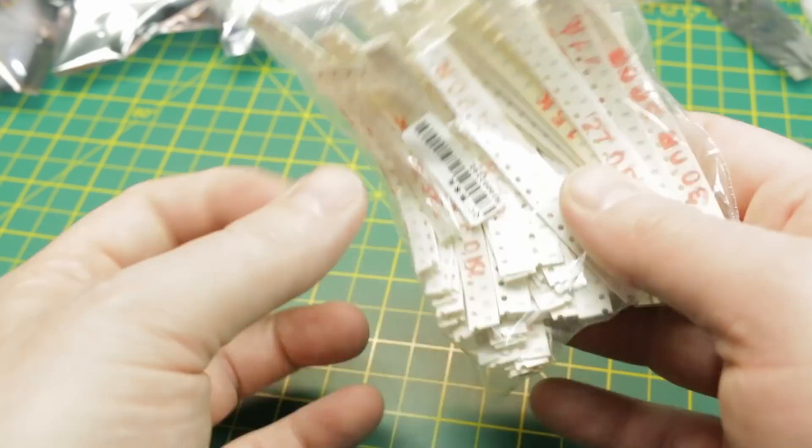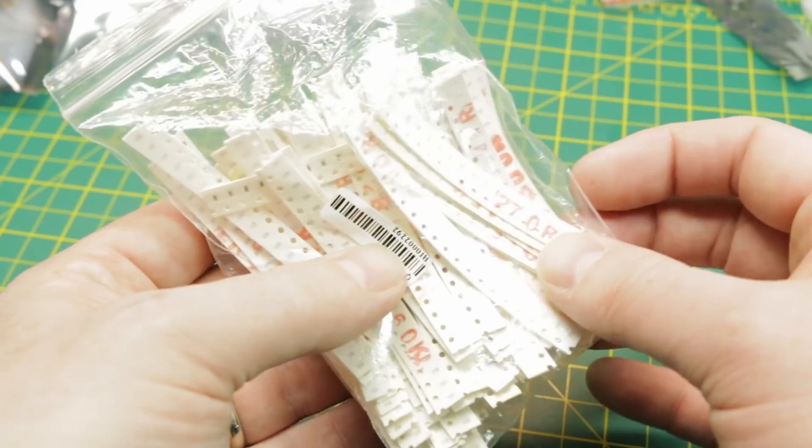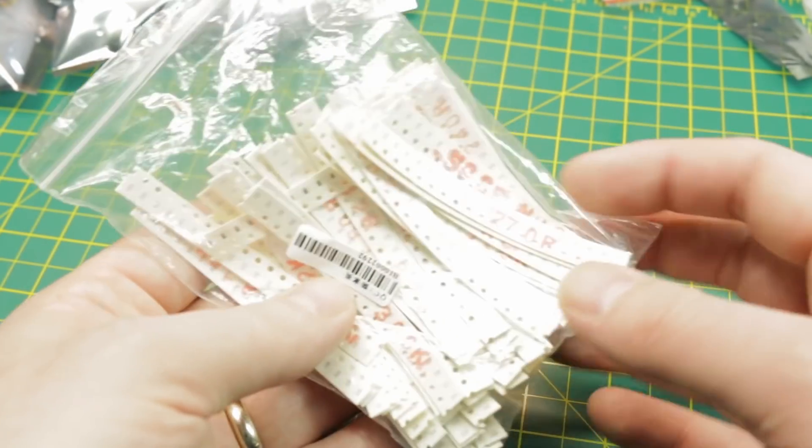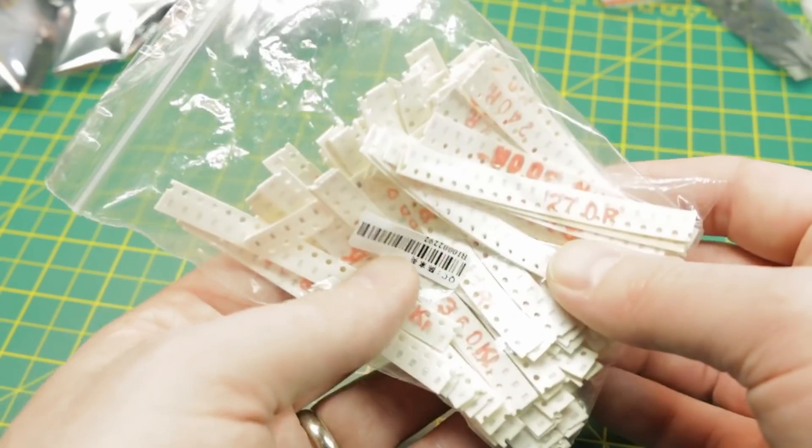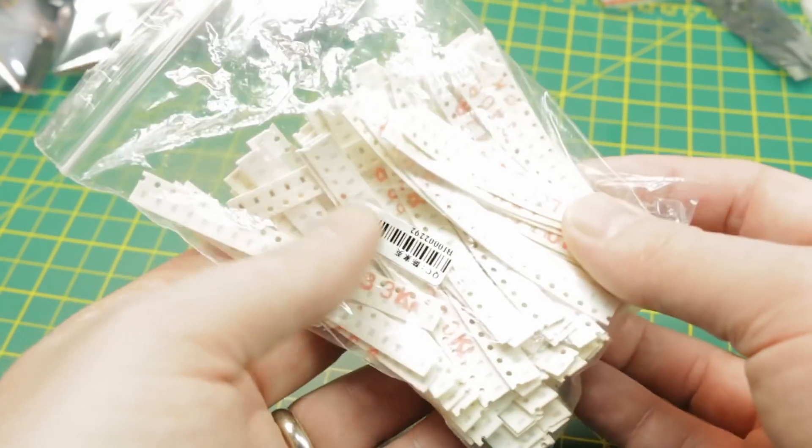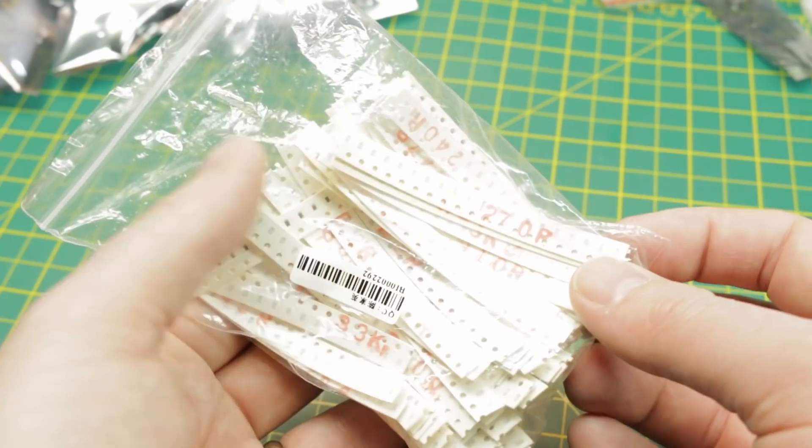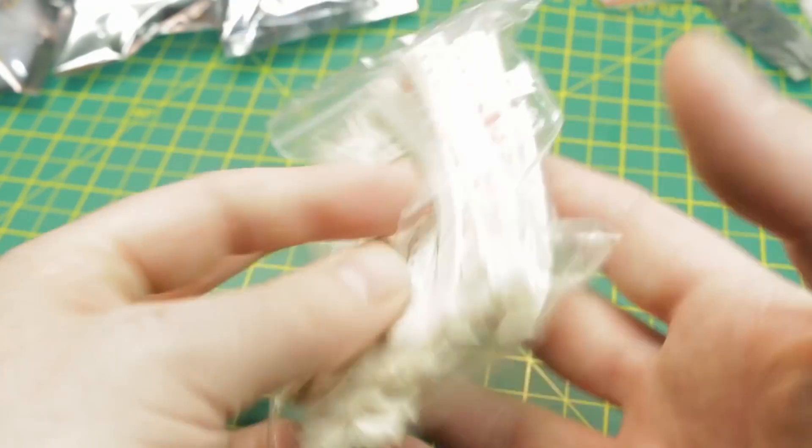These are just assortments that you pick up on eBay. They're just sliced off the reels and sold as an assortment to hobbyists because we don't need an entire reel of SMD components when we're just building one-offs. So they are very reasonably priced.